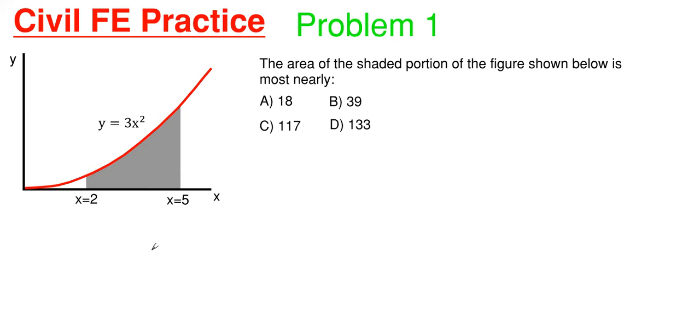So anytime you need to find the area under the curve, you have to integrate. And we are going to be integrating from our leftmost x portion to our rightmost x portion for our y equation with respect to x. So let's go ahead and fill these values in. So our leftmost x portion is going to be 2 and our rightmost is x equal to 5. And our y equation is simply just 3x squared dx.